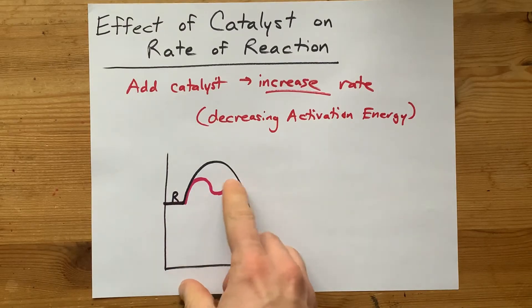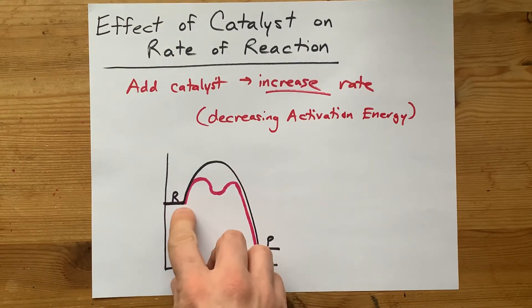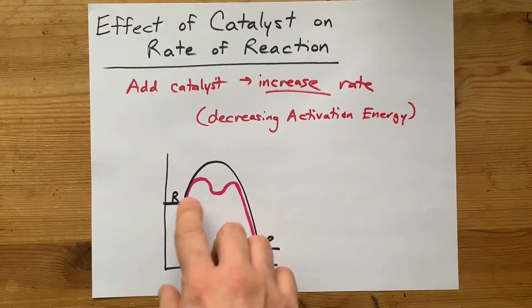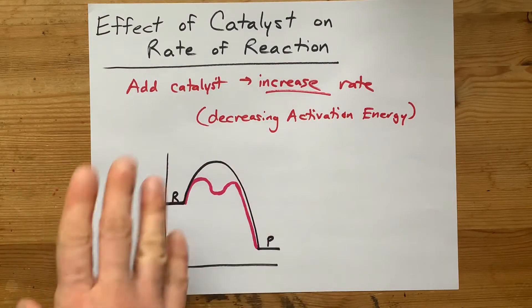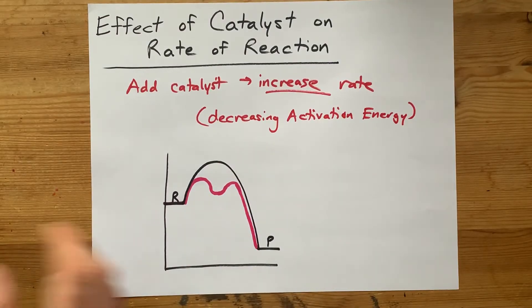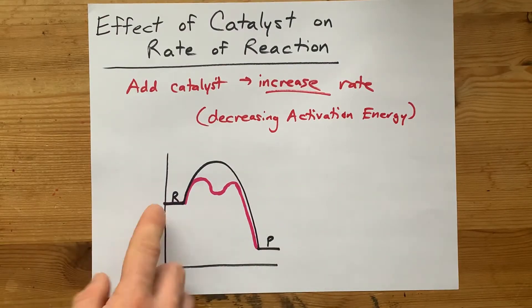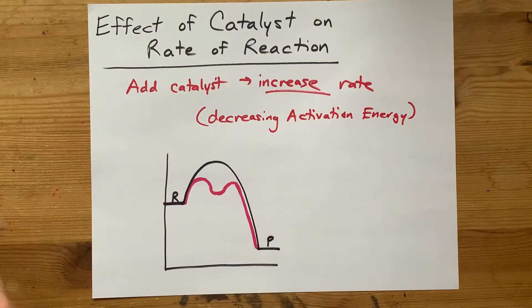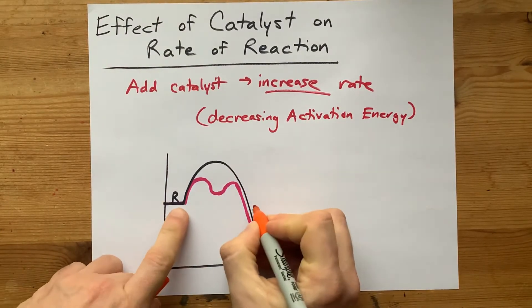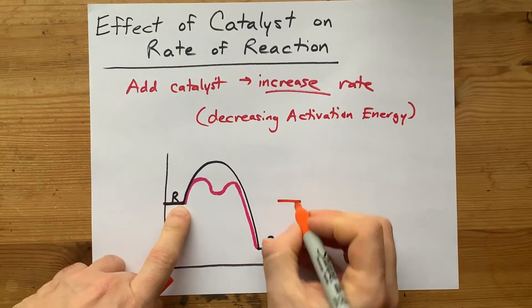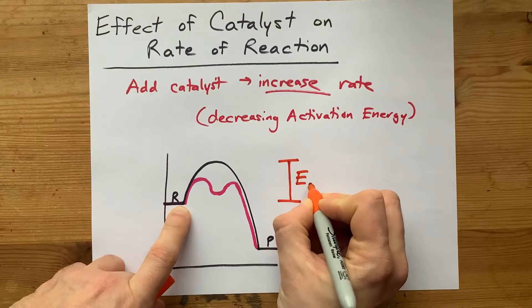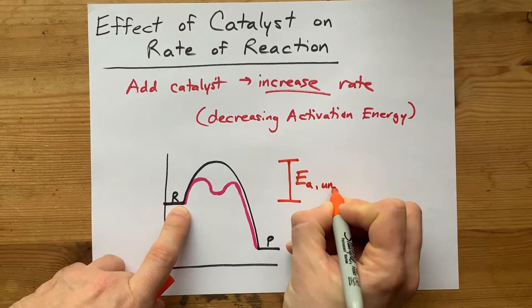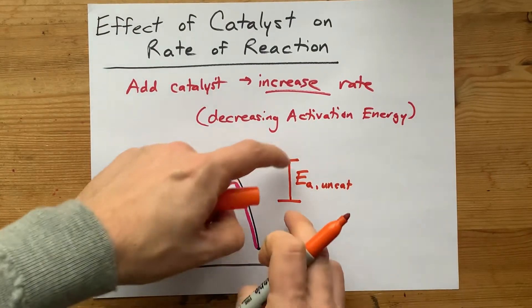I've drawn this as two humps, but the point is that overall the humps are smaller than the original one. I'm not talking about adding these together — I just mean the threshold. The amount of energy required to make reactants turn to products with the uncatalyzed reaction: the reactants started here, and you had to get up to here. The activation energy of the uncatalyzed reaction was this much.